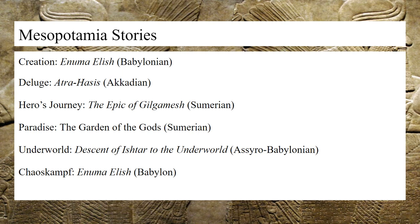The next myth is the underworld myth, and the best example is the Descent of Ishtar or Inanna, depending on which source you're looking at. This details the goddess Ishtar's descent to conquer the queenship of the underworld from her sister Ereshkigal, wherein she was killed but then escorted out of the underworld on behalf of the god Enki.